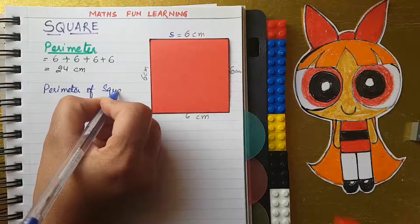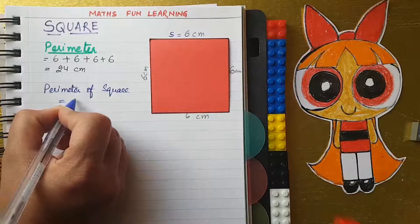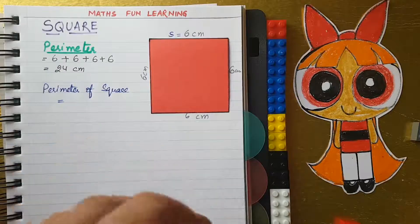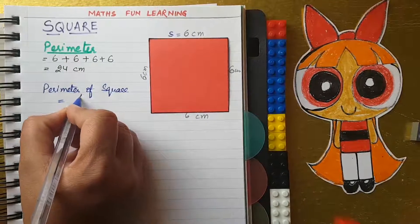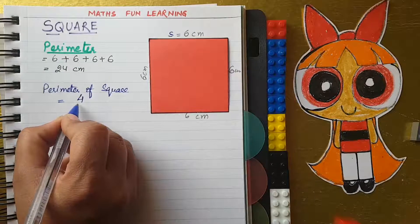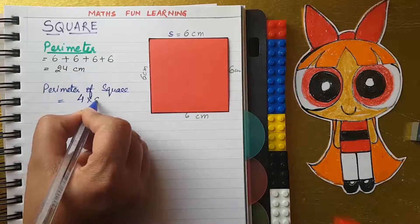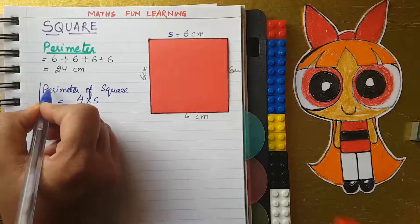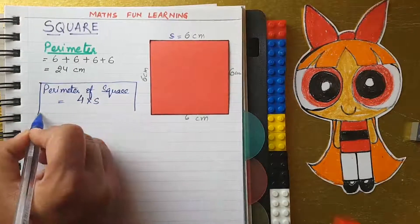So the perimeter of the square, you can see you added side four times. So you just write it in multiplication form: four times side. So this is the perimeter formula, 4 times s.